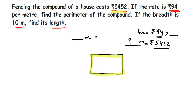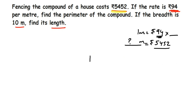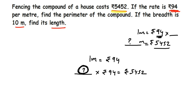So if I divide 5452 by 94, I'll get the total number of meters — that is, the perimeter. For one meter they take 94 rupees. We don't know the total perimeter, but for the total perimeter the cost is 5452. This means 94 has been multiplied by the total perimeter to give 5452.